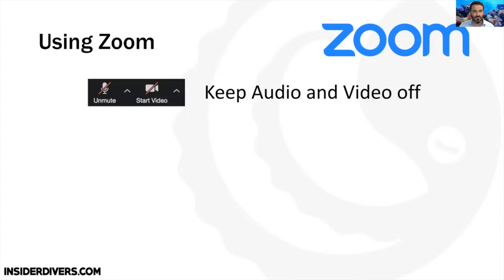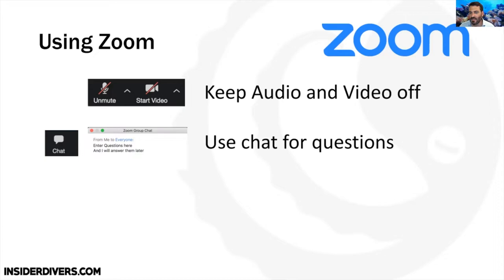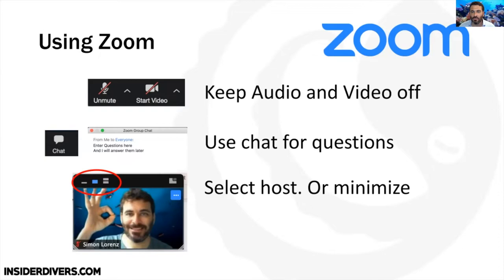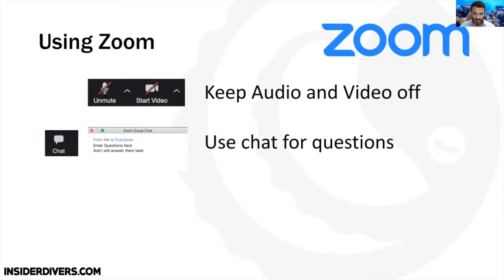Let's talk about Zoom settings. In the left corner of your screen you should have 'unmute' and 'start video' — which means you've turned them both off, that's good. If you want to ask a question, you can put it in the chat. There's a little button called 'chat'; if you can't see it, click on options and press chat. You can also press unmute and say something, but it will take a bit of time.